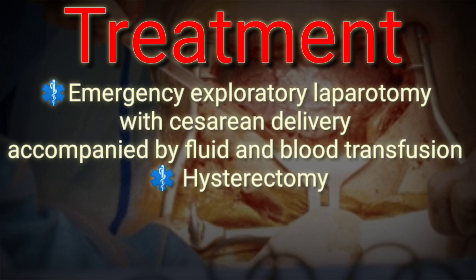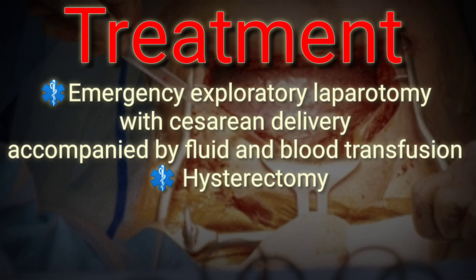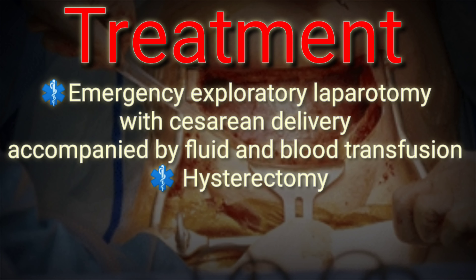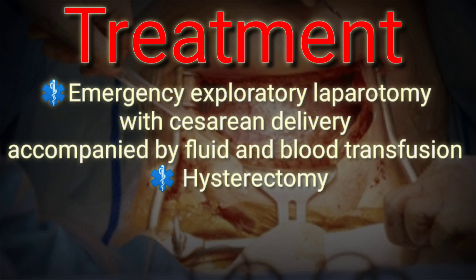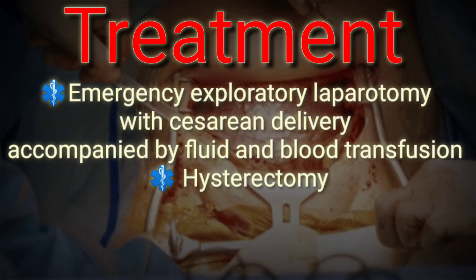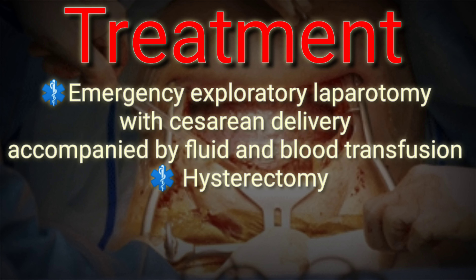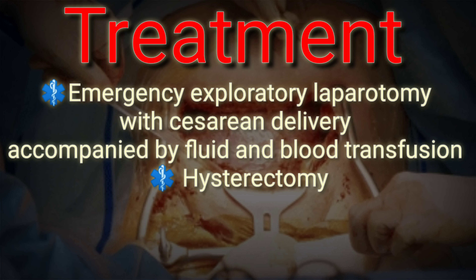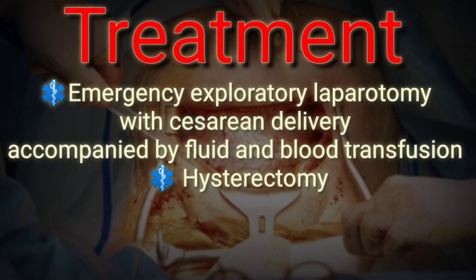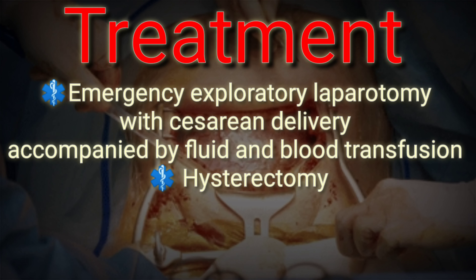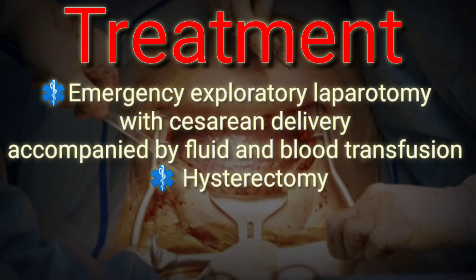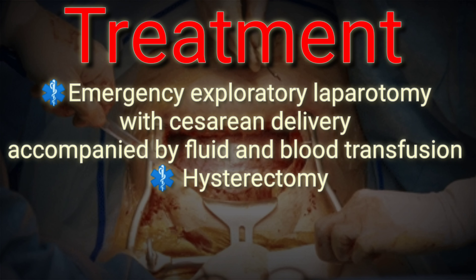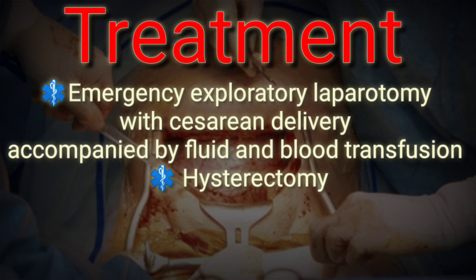How is uterine rupture treated? Emergency exploratory laparotomy with cesarean delivery, accompanied by fluid and blood transfusion, is indicated for management. If uterine rupture causes major blood loss, surgeons may need to remove the woman's uterus to control bleeding — that is, a hysterectomy — after which a woman can no longer become pregnant. Women with excessive blood loss also receive blood transfusions.